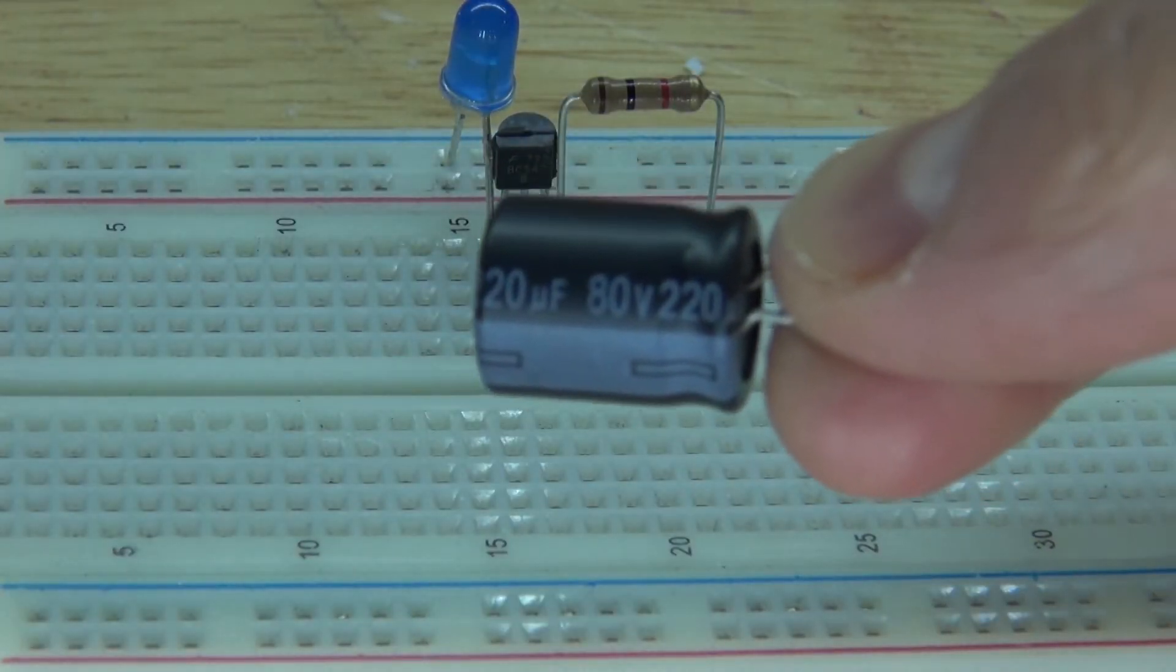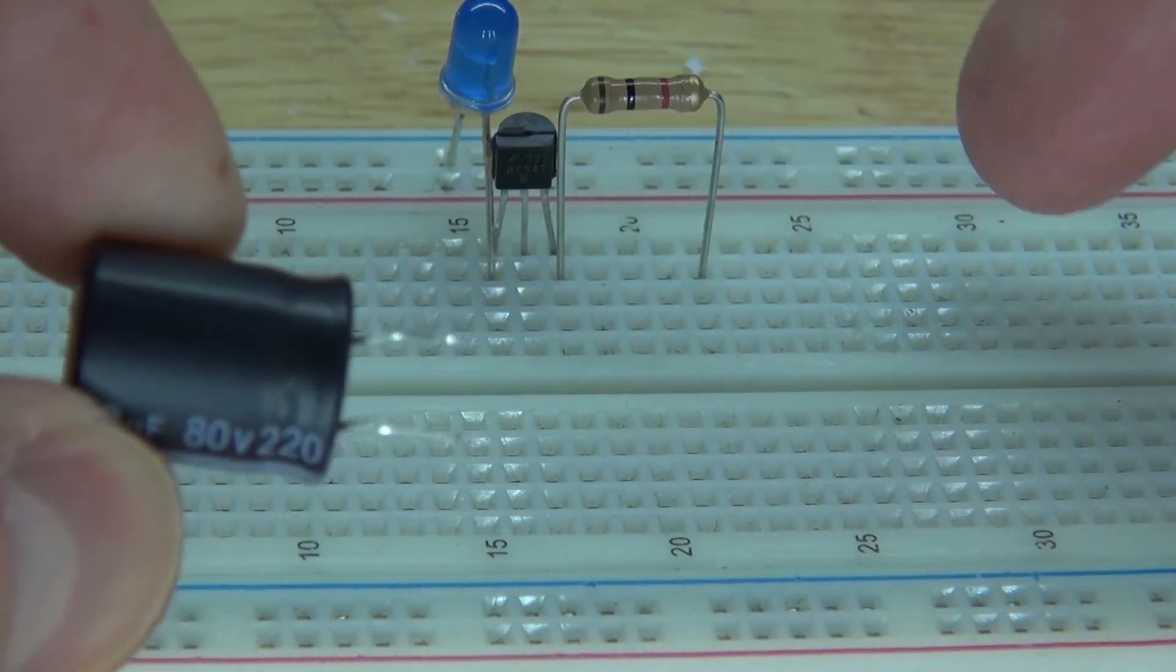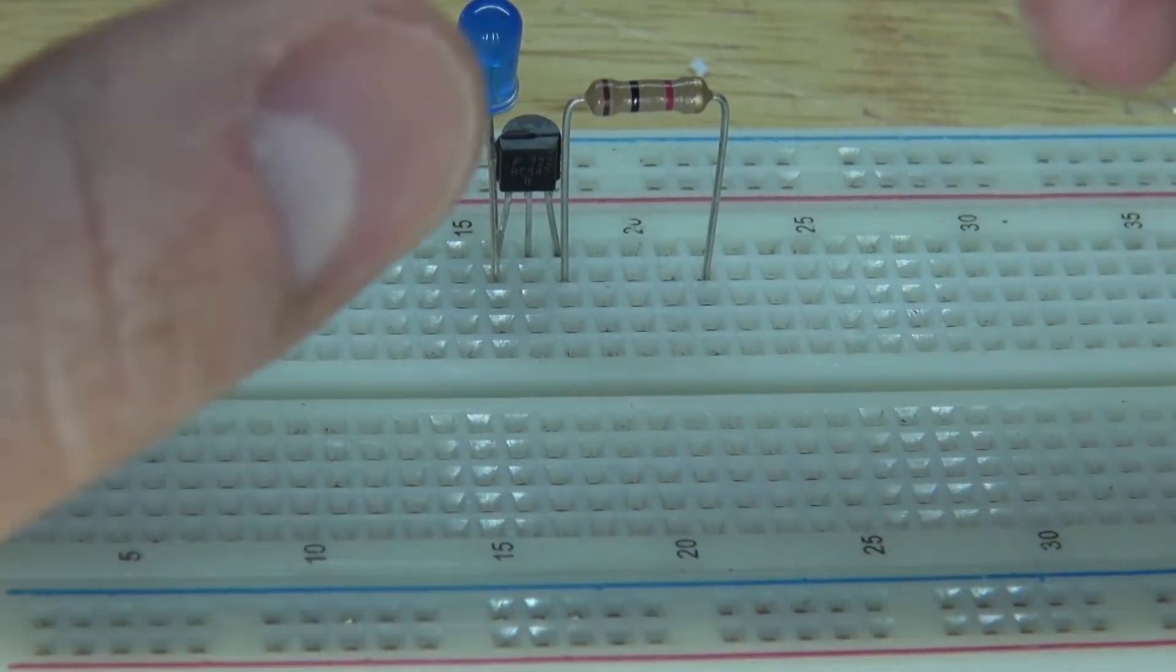Next I'm going to take this 220 microfarad electrolytic capacitor, where this pin is negative and connects to the negative rail. This pin is positive and connects to the positive rail. I want to connect it just like this.